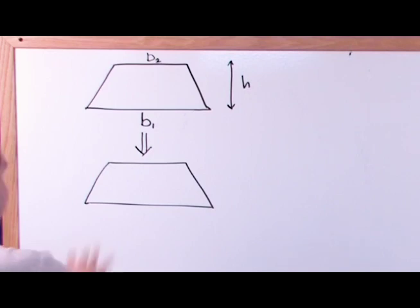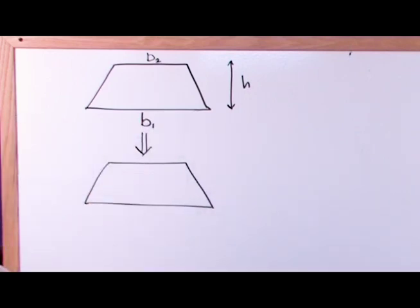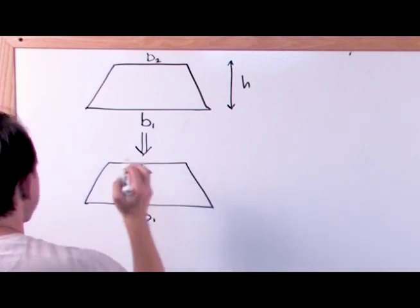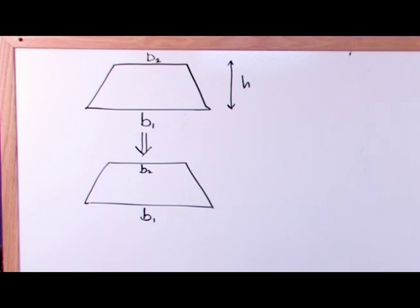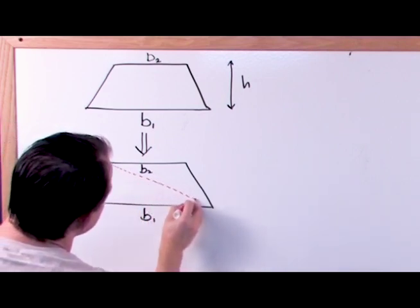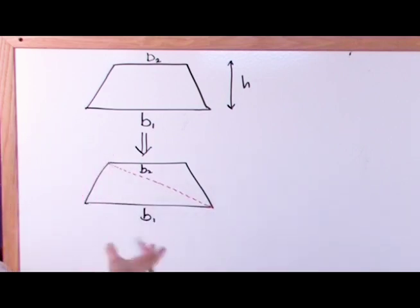Starting again with the trapezoid, we have B1 at the bottom and B2 at the top. This is very similar to what we did when we found the area of a triangle by looking at rectangles to help us figure out how to calculate it. What would happen if we just cut this trapezoid in half right along the diagonal?